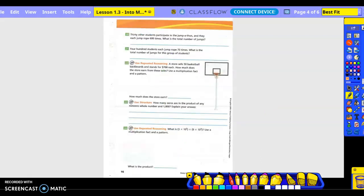So number 20. 30 other students participate in a jump-a-thon, and they each jump rope 600 times. What is the total number of jumps? So 30, right, 600 times. What is the total number of jumps?